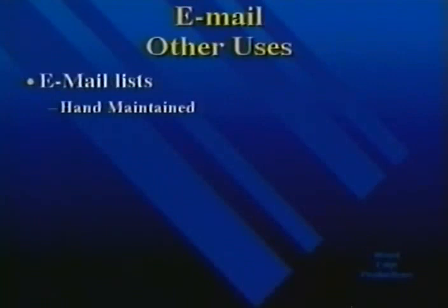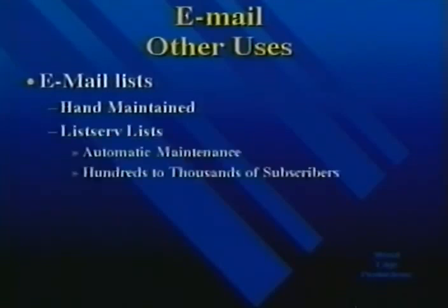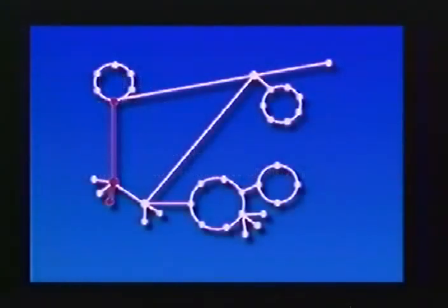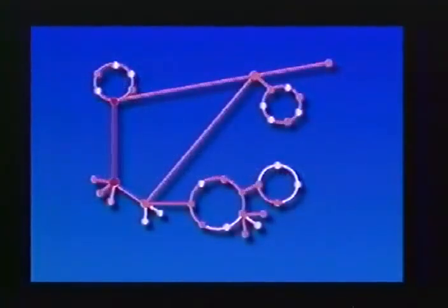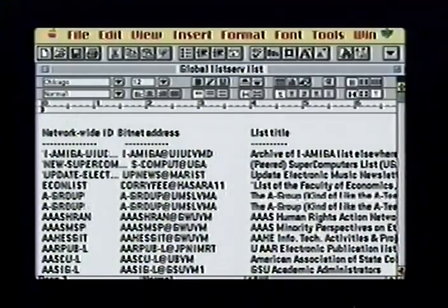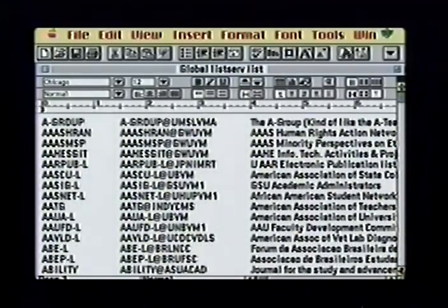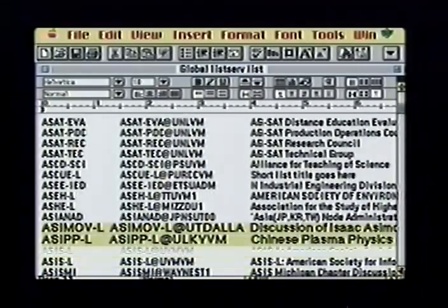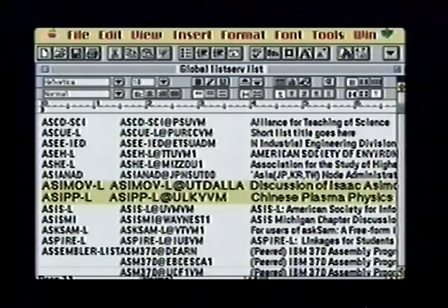In addition to personal correspondence, email can be used to subscribe to what are called email lists. These can be small, hand-maintained lists of people who share a common interest, or they can be listserv lists, which feature automated maintenance and subscription and may include hundreds or thousands of subscribers. When you subscribe to a list, any email sent to it by a subscriber will be automatically sent to all other subscribers. If you subscribe to a fairly popular list, you may receive 20 pieces of email per day. Subjects range from Isaac Asimov discussions to the homebrew list to the world-famous Chinese Plasma Physics.